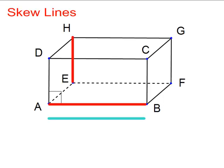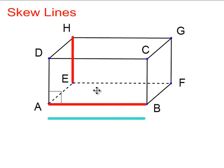Skew lines. It's easier to talk about what's parallel before we talk about what's skew. Line segment AB appears to be parallel to the blue segment — they don't meet. But line segment HE in the back: if you pretend it's a line extending infinitely up and down, and AB extends infinitely left and right, they will never intersect. That's because they're not on the same plane, but they are not parallel. So they are called skew — they don't intersect, but they're not parallel.